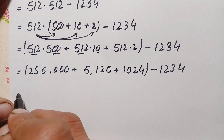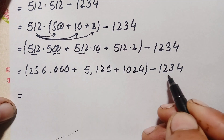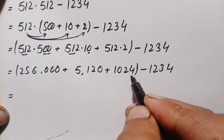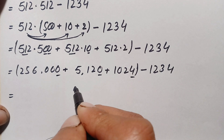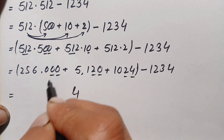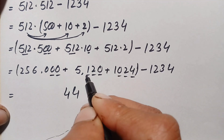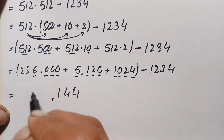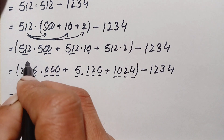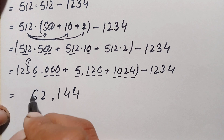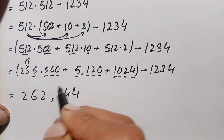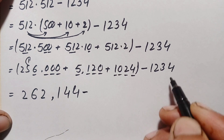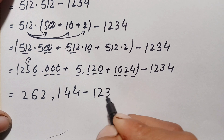Now we add these three numbers and then subtract 1234 from the result. Adding from the ones position: 4 plus 0 plus 0 is 4; 2 plus 2 plus 0 is 4; 0 plus 1 plus 0 is 1; then 1 plus 5 is 6; 6 plus 6 is 12, write 2 carry 1; 5 plus 1 plus 2 is 8... The addition of these three numbers gives 262,144, minus 1234.